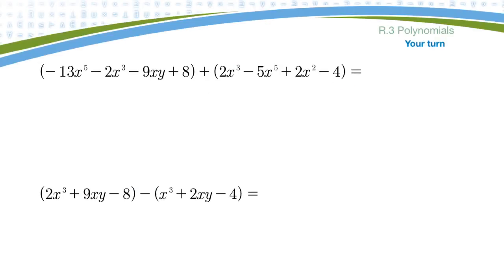Okay, so press pause, try these on your own, and then press play and see how you do. I'm going to drop brackets. Fifth minus 2x cubed minus 9xy plus 8 plus 2x cubed minus 5x to the fifth plus 2x squared minus 4. So x to the fifth, their highest degree, there's one, there's one. So that'll be minus 18x to the fifth. So those are gone.